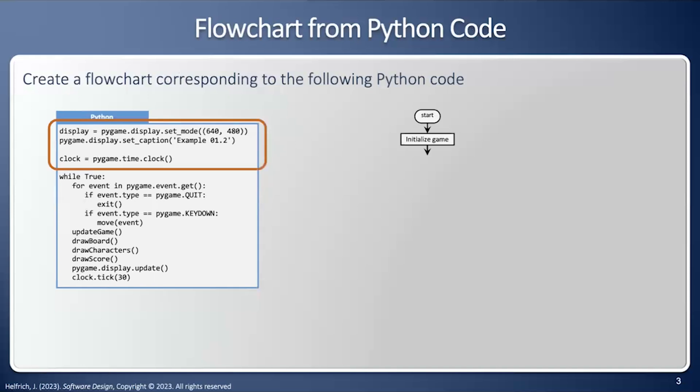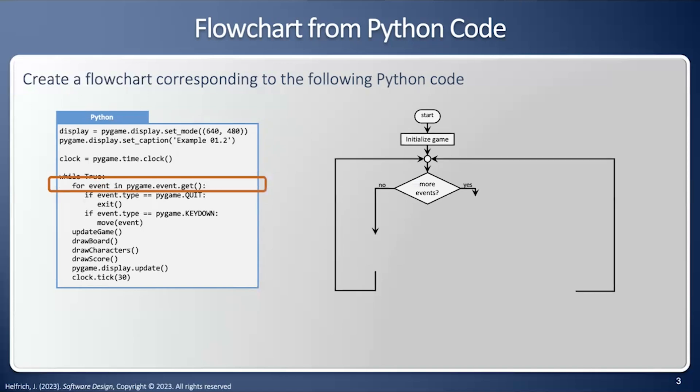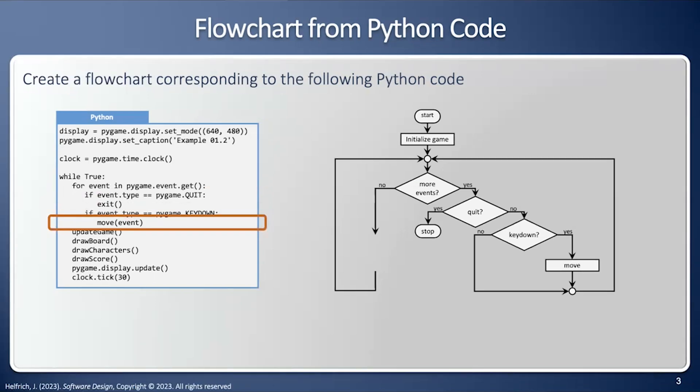So we start with initializing the game, and then while true. So we're always going to loop back on ourselves. And then we have a for loop in between here. And how do we know if we want to go? If there's more events. If there are events, then we're going to see if we quit. If we quit, then we'll exit. If there's a key down event, then we will move. Otherwise, we'll loop back on ourselves.